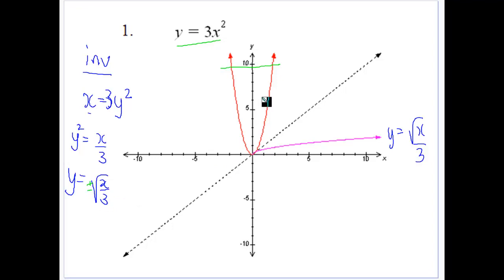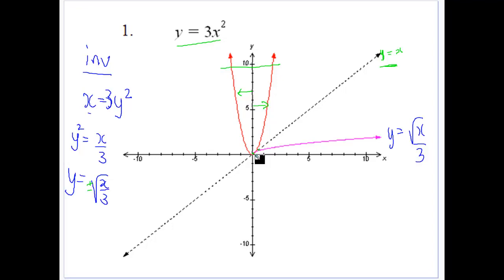To restrict our domain, I need to look at either side of the y-axis — either going that side or going that side. In this case I've gone to the positive side. I've graphed it here, and technically that's on either side of the line y equals x, which is something you should graph every time when drawing inverse functions. I've only got the top half drawn because I've decided to restrict the domain of 3x squared to x greater than or equal to 0, which means the range of the inverse function is y greater than or equal to 0.